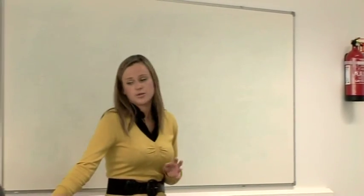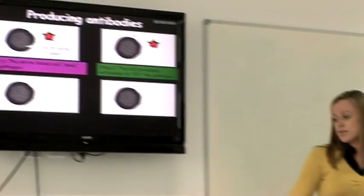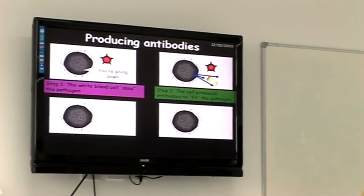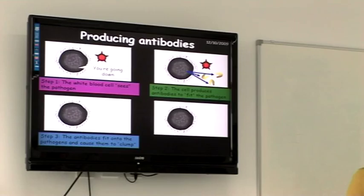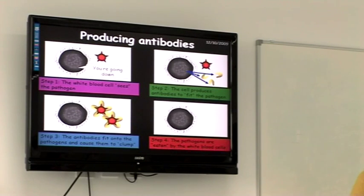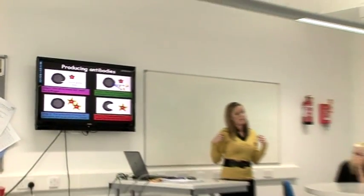What happens when we produce antibodies? A white blood cell sees the pathogen, recognizes it as something dangerous and foreign, and then produces antibodies. The antibodies are really specific to the shape of the pathogen. What the antibodies do is clump the pathogens together - they join onto them and cause them to stick in a clump. Then a different white blood cell comes along and eats the clump, removing all of those pathogens from the body.